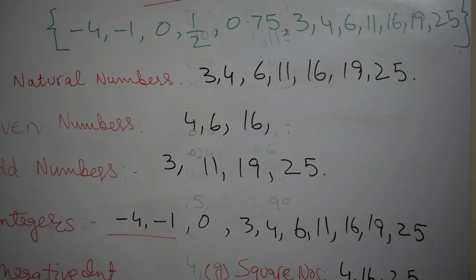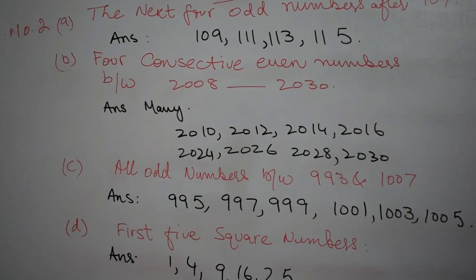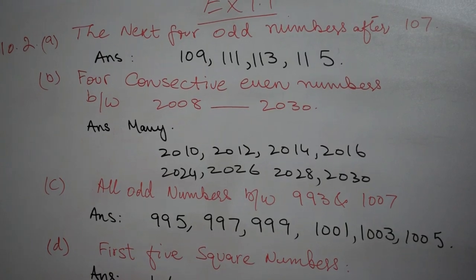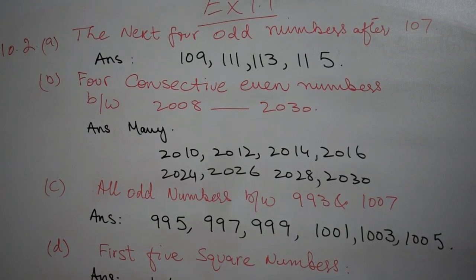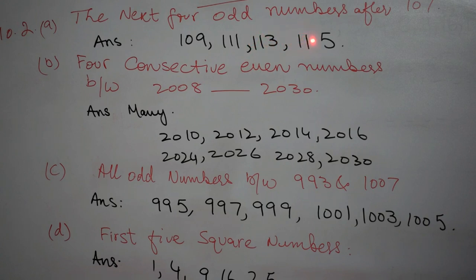Now we will proceed to the second question. Well dear students, now we proceed towards question number 2 and I have already written it on the board. It says the first question is the next 4 odd numbers after 107. Here you can see it clearly. After 107, 107 is not included. So the answer is 109, 111, 113, 115.